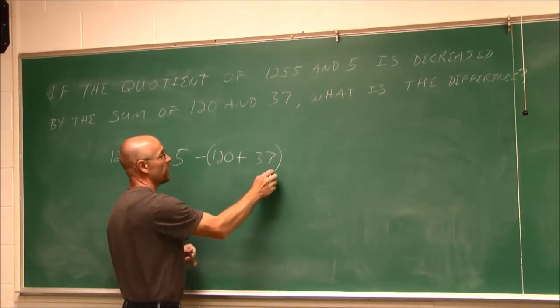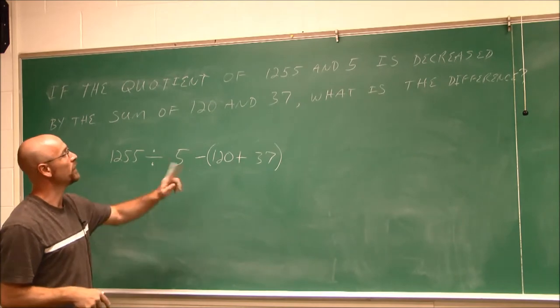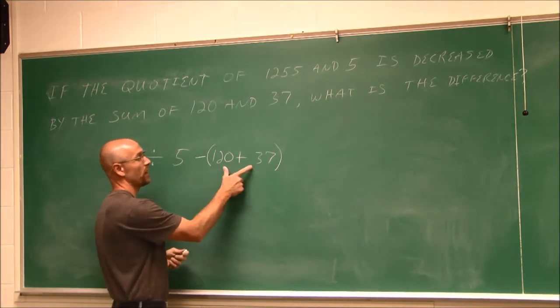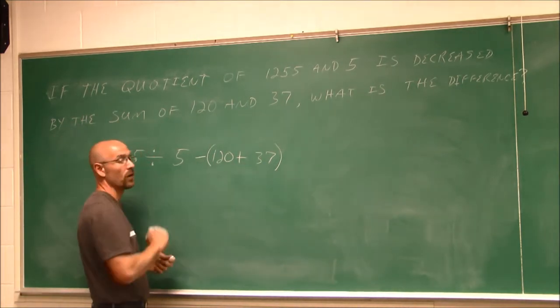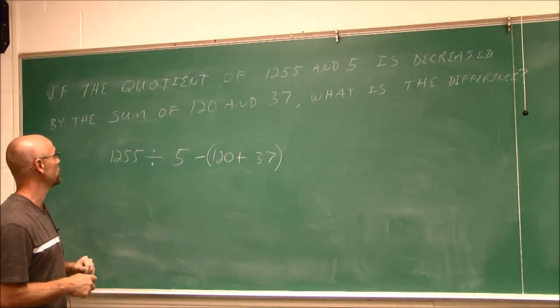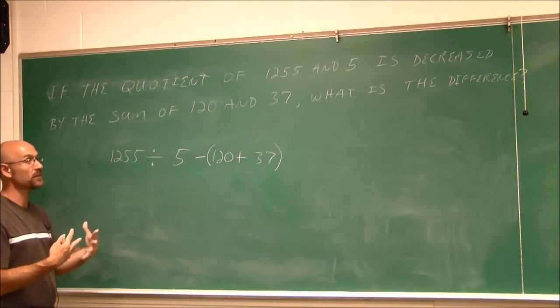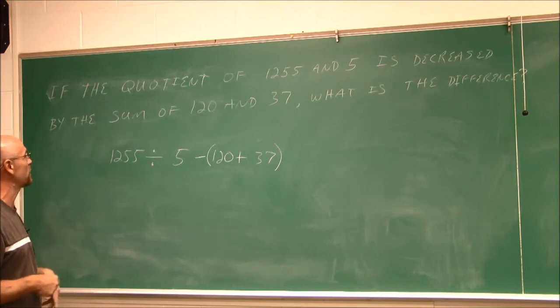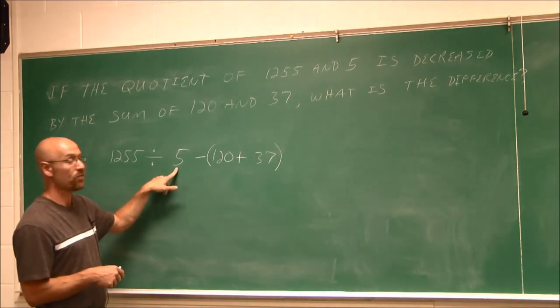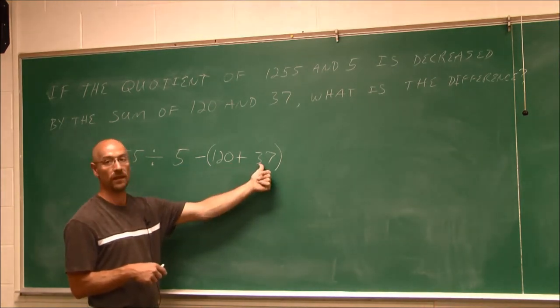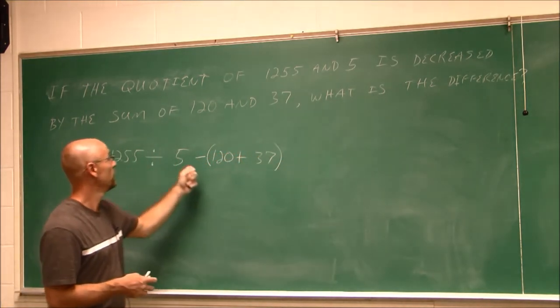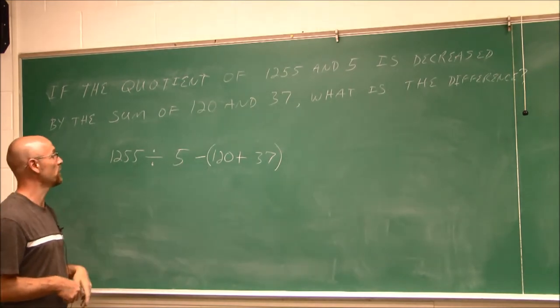But here's where we have to be careful. I have to put this in parentheses. Because I'm decreasing by the sum. Decreased by the sum. Decreased by this whole sum. So I have to put this together before I can decrease it. So the order of the words kind of tells me the order in which I have to approach this given information. So looking at this, I try to read this in the same way I got that. That's kind of one way to practice reading it that third time. I have the quotient of 1,255 and 5. And it's being decreased by the sum of 120 and 37. So what is it asking me to find? Well, when I read it again, it says, what is the difference? It says, simplify these and find their difference. So I'm going to do that.